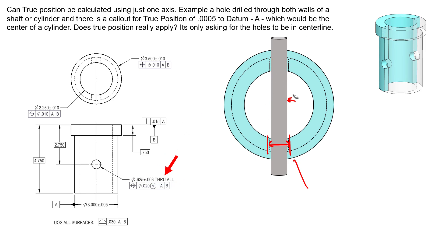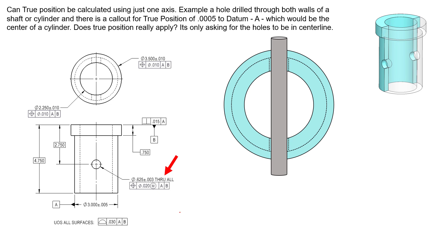We can add clarification using the continuous feature (CF) symbol. While the 'through all' note implies one feature, since these are technically disjoint features we can add the CF symbol to explicitly state this is one continuous feature — adding further clarity to the scenario.